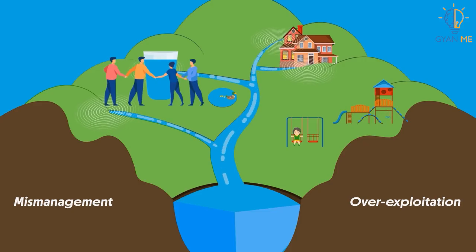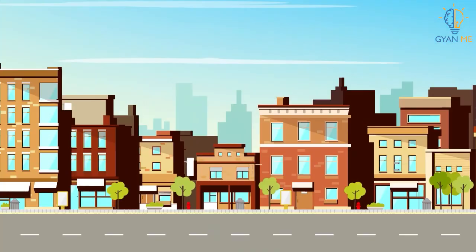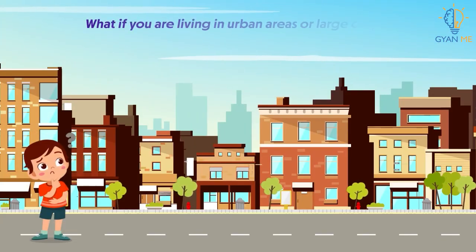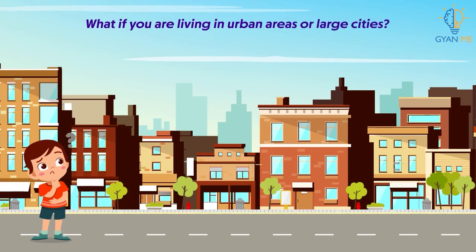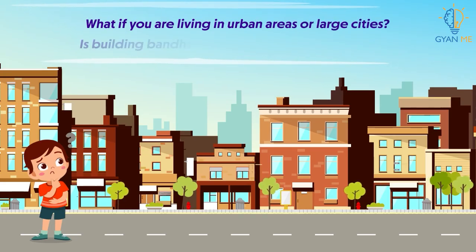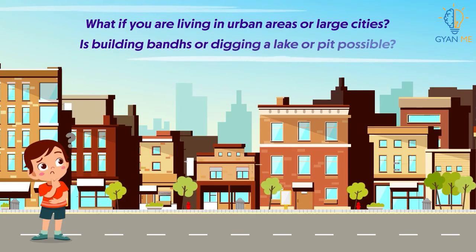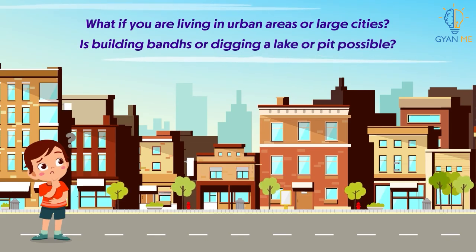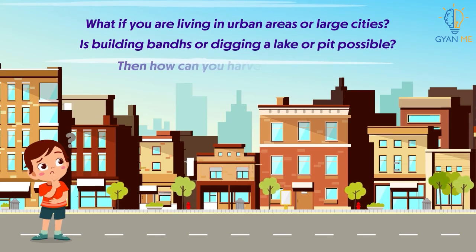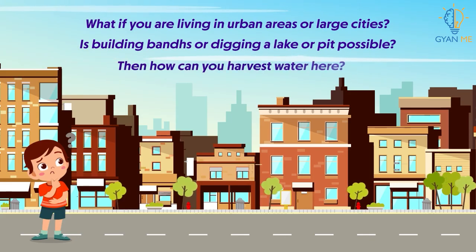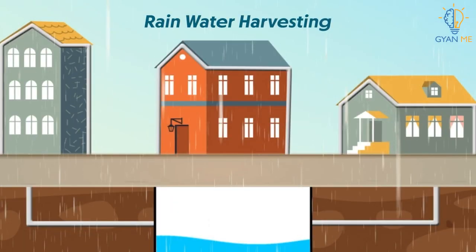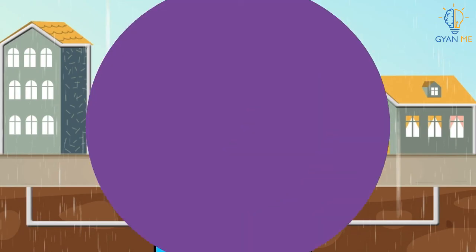Now, this is about locals or village communities. But what if you are living in an urban area or large cities? Is building barns or digging a lake or a pit possible here? Of course not. Then, how can you harvest or conserve water here? Simple — by setting up rooftop water collecting units. We will see what these are in our next video.